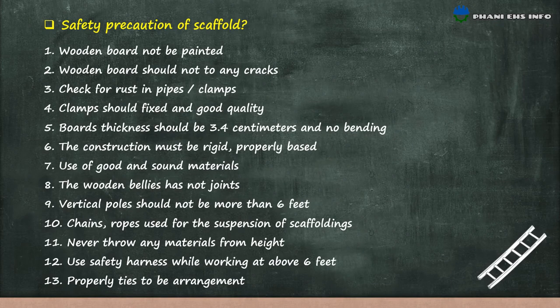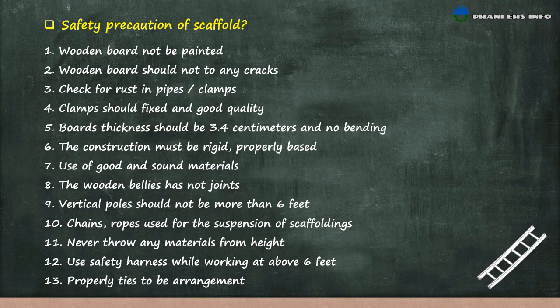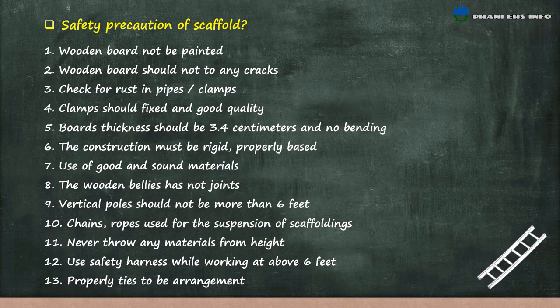Safety precautions for scaffolding: wooden boards not to be painted; wooden boards should not have any cracks; check for rust in pipes and clamps; clamps should be fixed and of good quality; board thickness should be 3-4 cm with no bending; the construction must be rigid and properly based; use good and sound materials; the wooden members should have no joints; vertical poles should not be more than 6 feet apart; change ropes used for the suspension of scaffolding; never throw any material from heights; use a safety harness while working above 6 feet; and proper ties to be arranged.